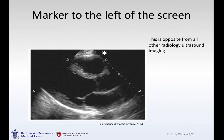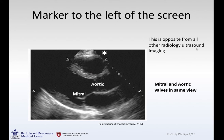Your marker is off to the left of the patient, right of the screen — opposite from all other ultrasound imaging. You'll see the mitral and aortic valves in the same view, along with the anterior septum, lateral walls, and the pericardium.